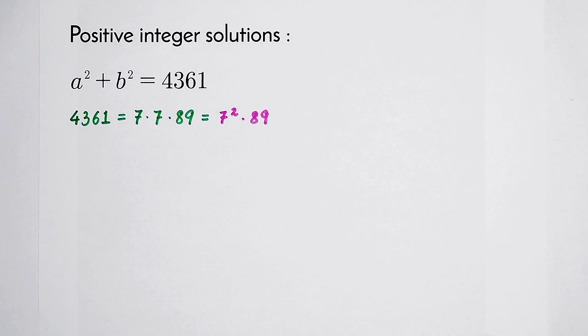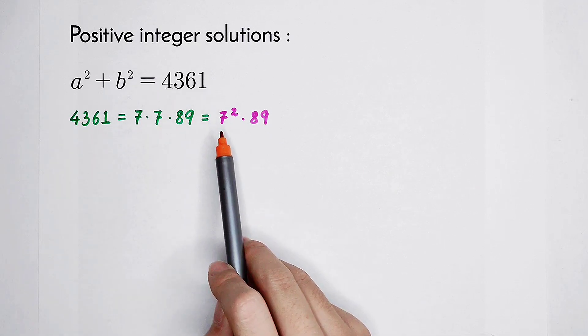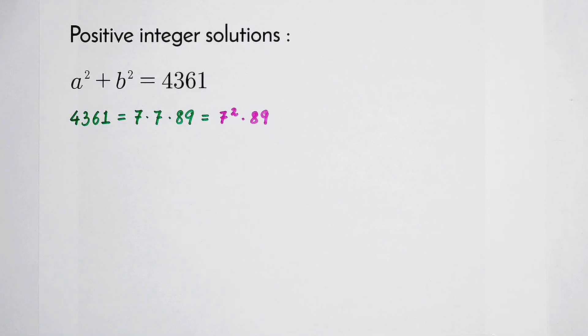Maybe you are going to say that 7 is a factor of a and b, but we cannot decide it so early. We have to prove. The only way is to use a modulo. Because a squared and b squared, they're actually the same.